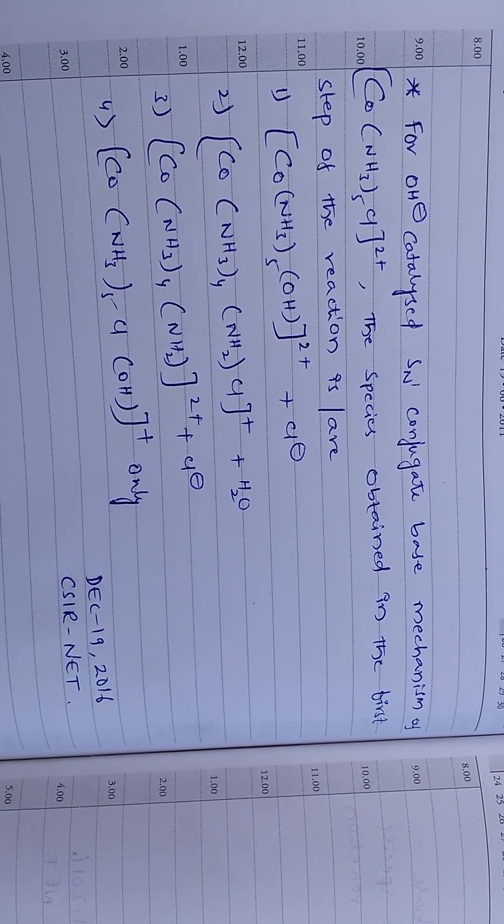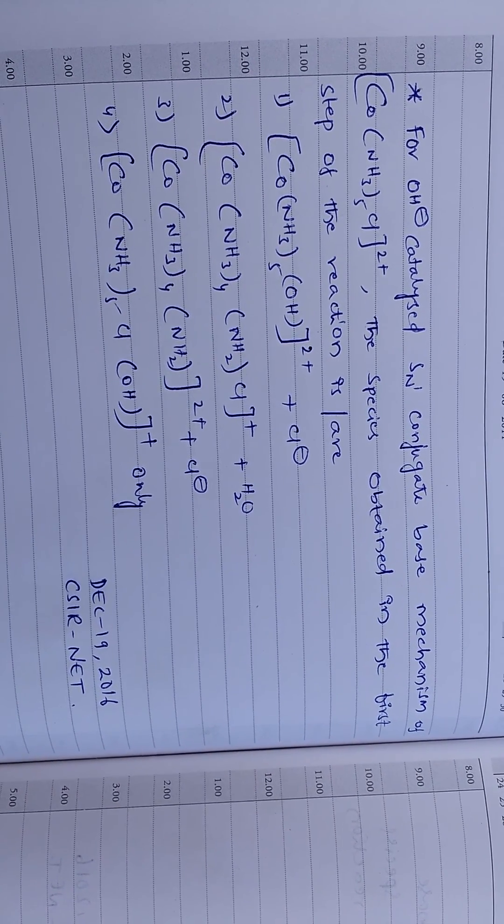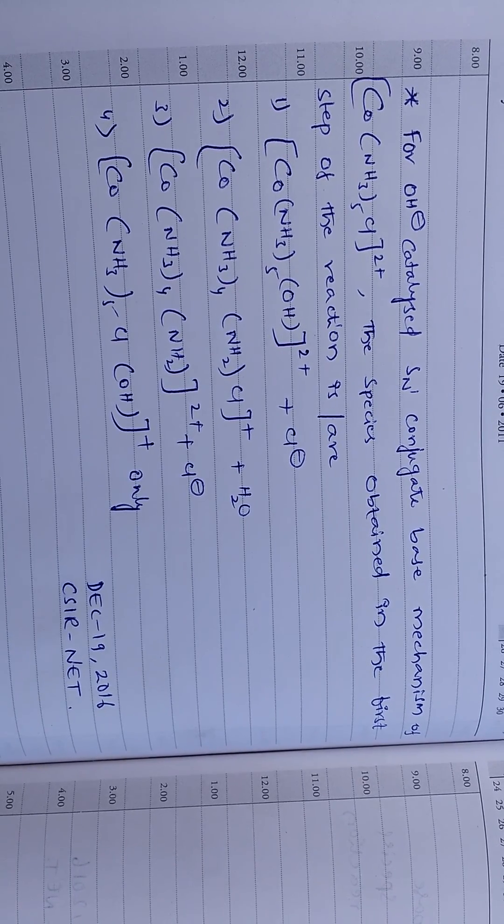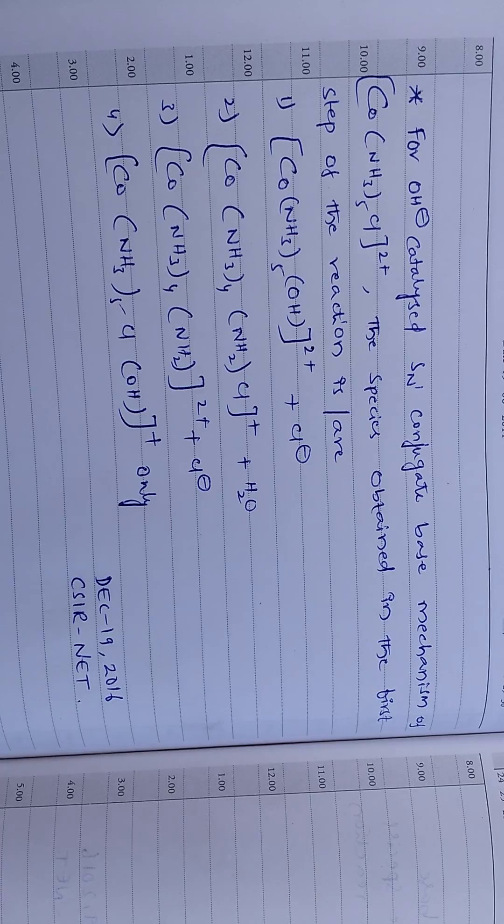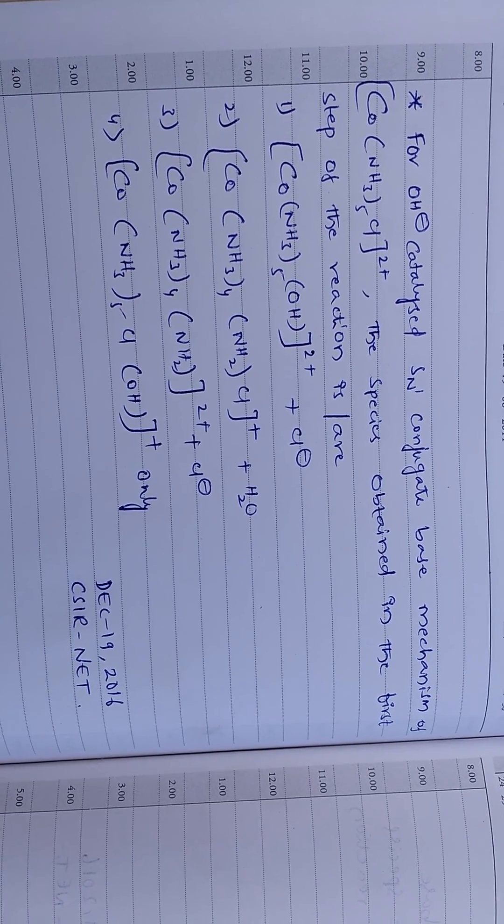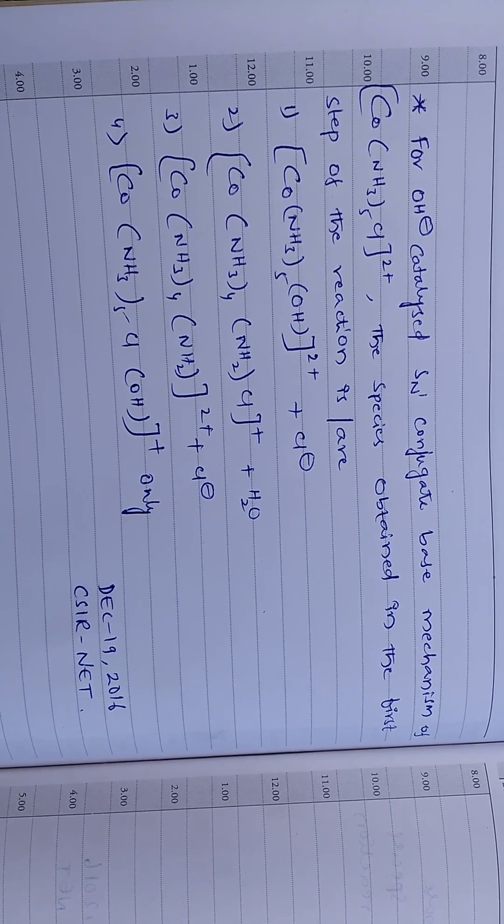The question is, for OH- catalyzed SN1 conjugate base mechanism of cobalt complex, that is Co(NH3)5Cl plus 2, the species obtained in the first step of the reaction is...